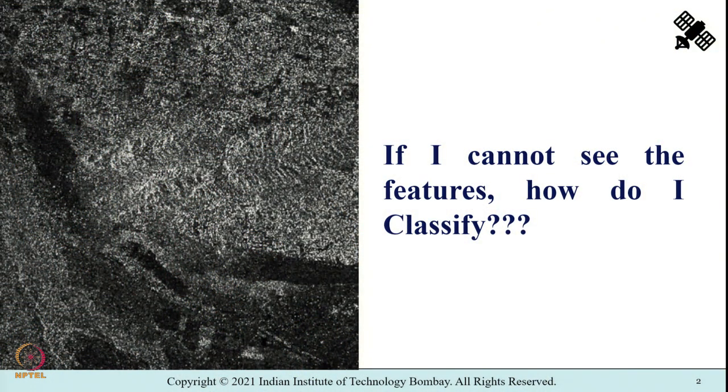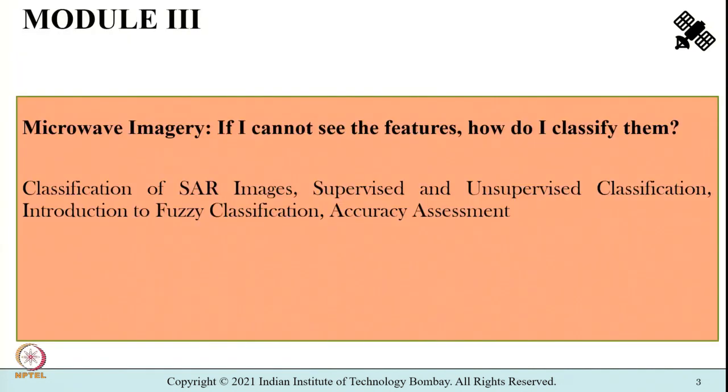I have used the term 'classify,' but you can argue that a synthetic aperture radar image is monochrome — very difficult to visually identify what is what, very difficult to demarcate features. If I cannot see the features, how am I going to classify? Very valid point. So this is what we shall be covering as part of module 3 on image classification. We will learn about classification of synthetic aperture radar images and will cover supervised, unsupervised, and fuzzy classification methods and their accuracy assessment.